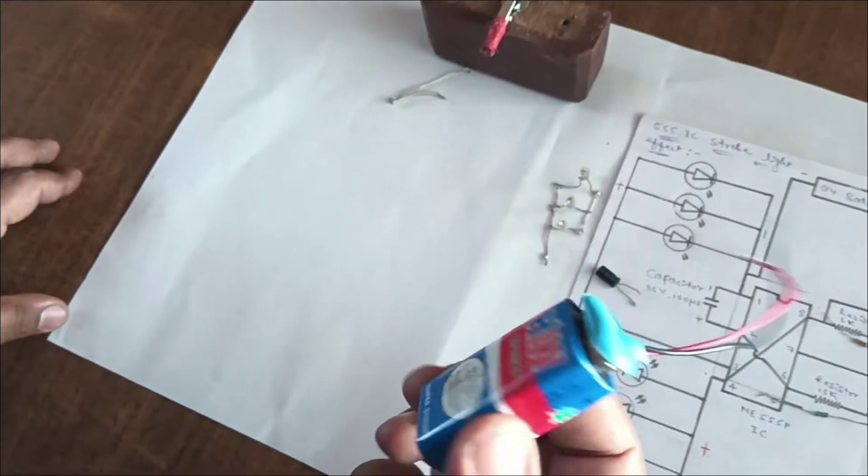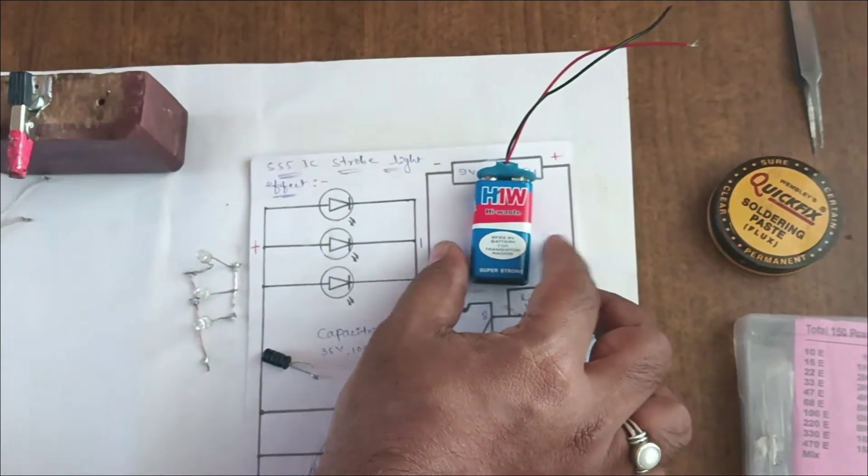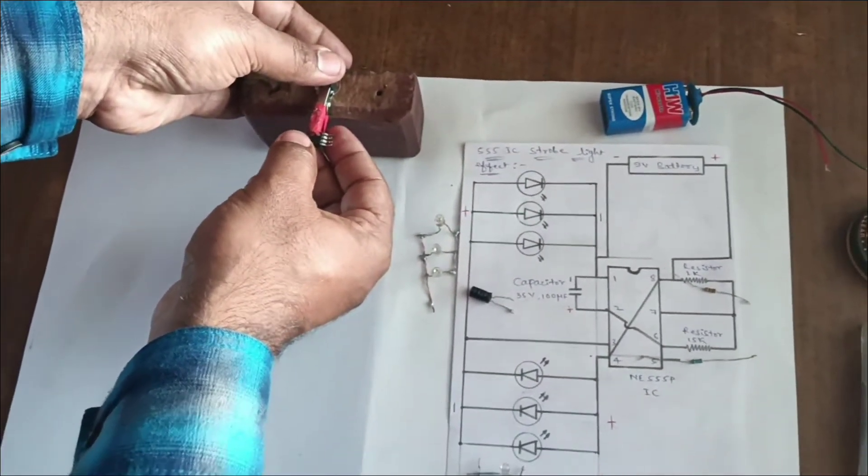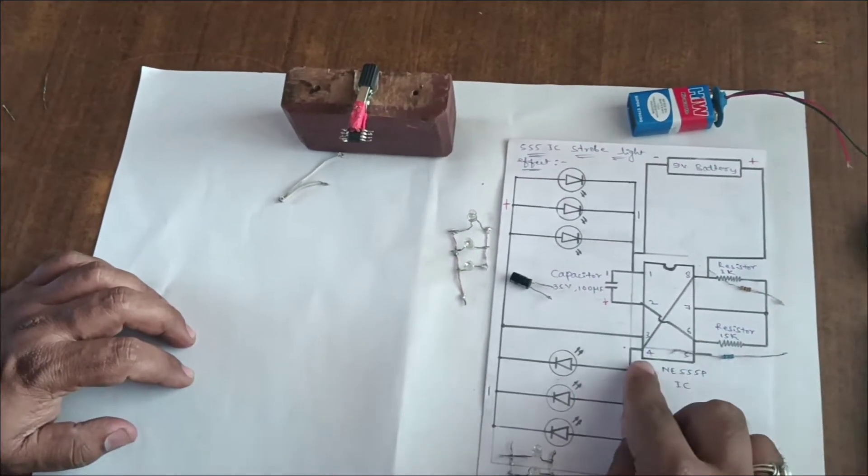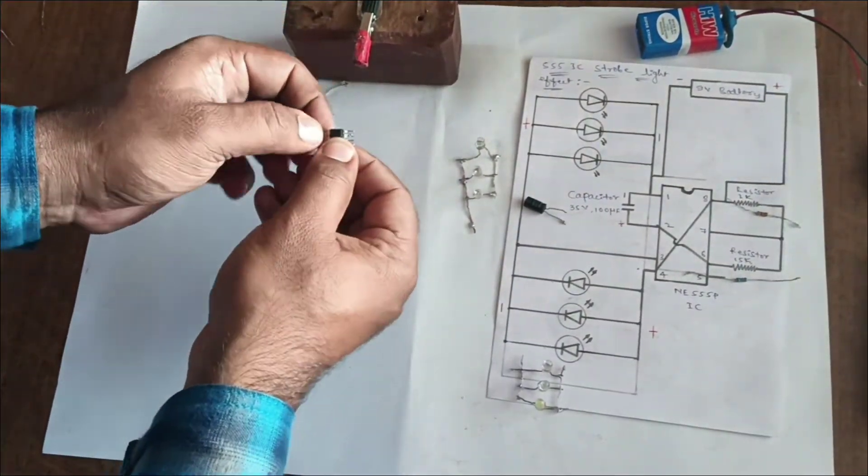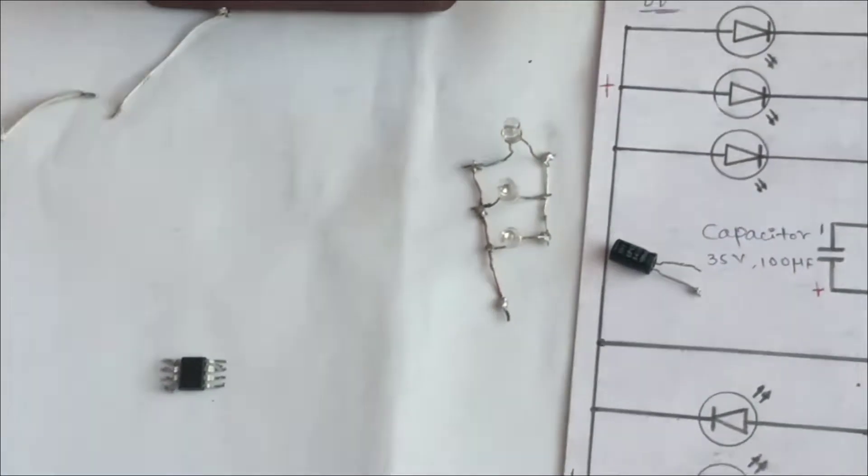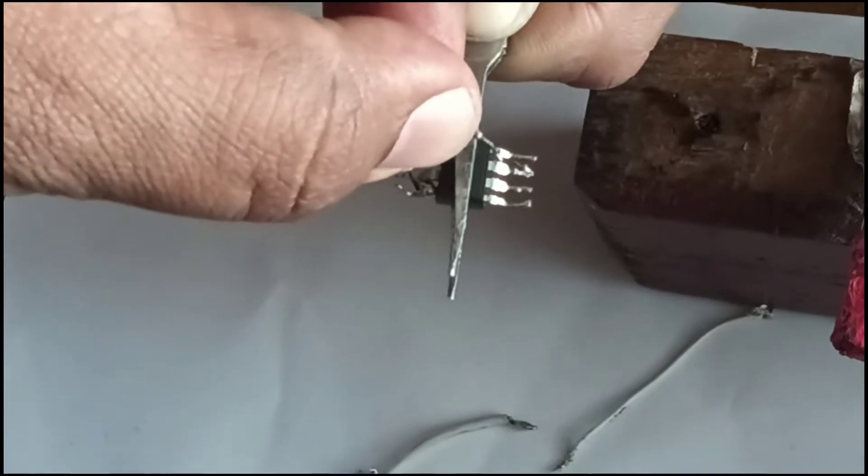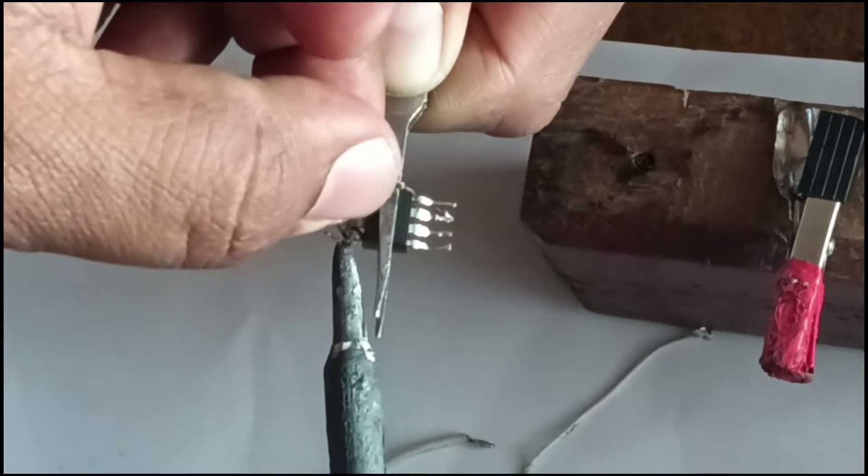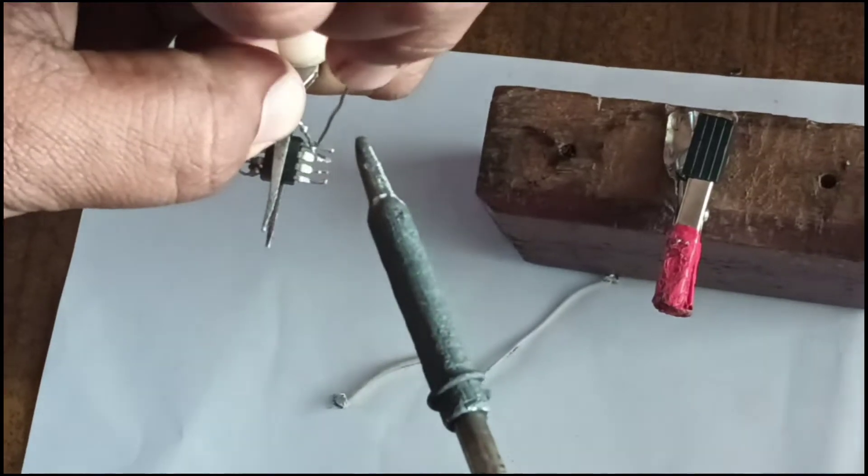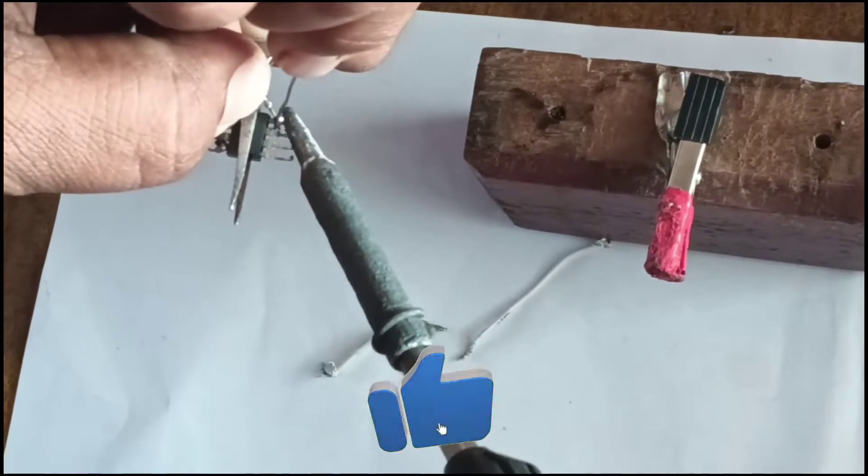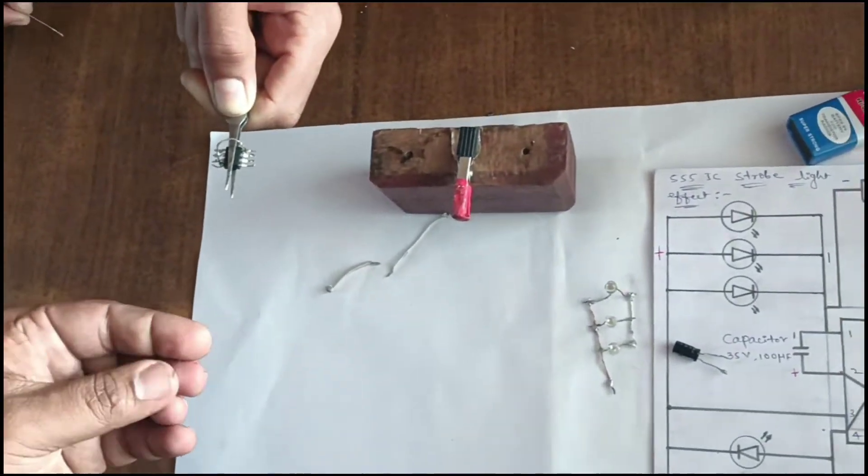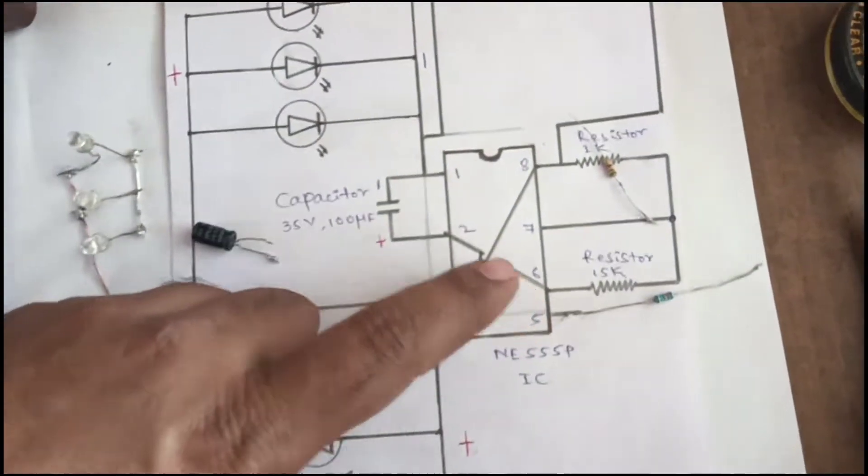This is the 9-volt battery shown in the circuit diagram. Now let's start the connections. This is the 555 IC. Here we short pin number 4 and pin number 8 together using a connecting wire. Next, pin number 2 and pin number 6 are shorted.